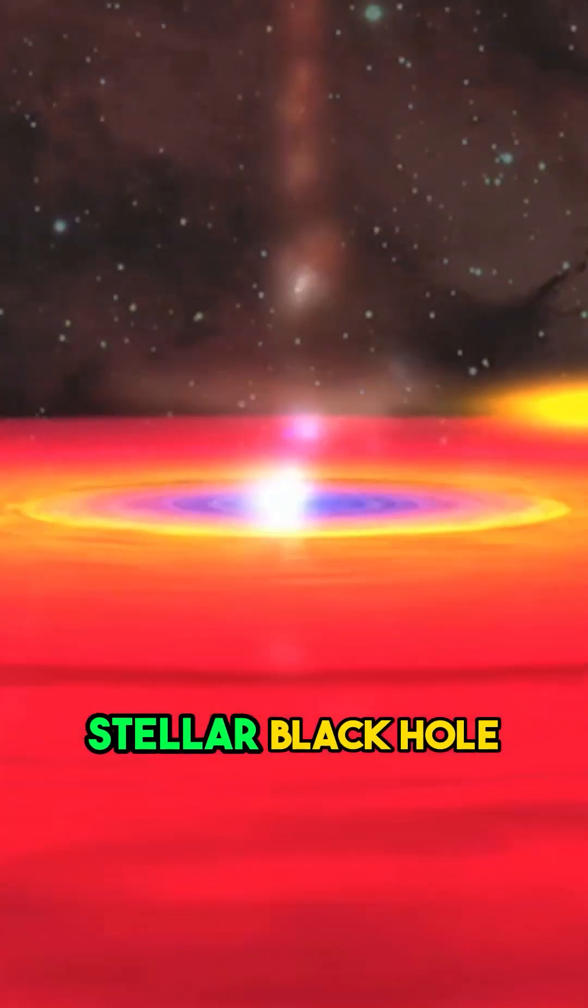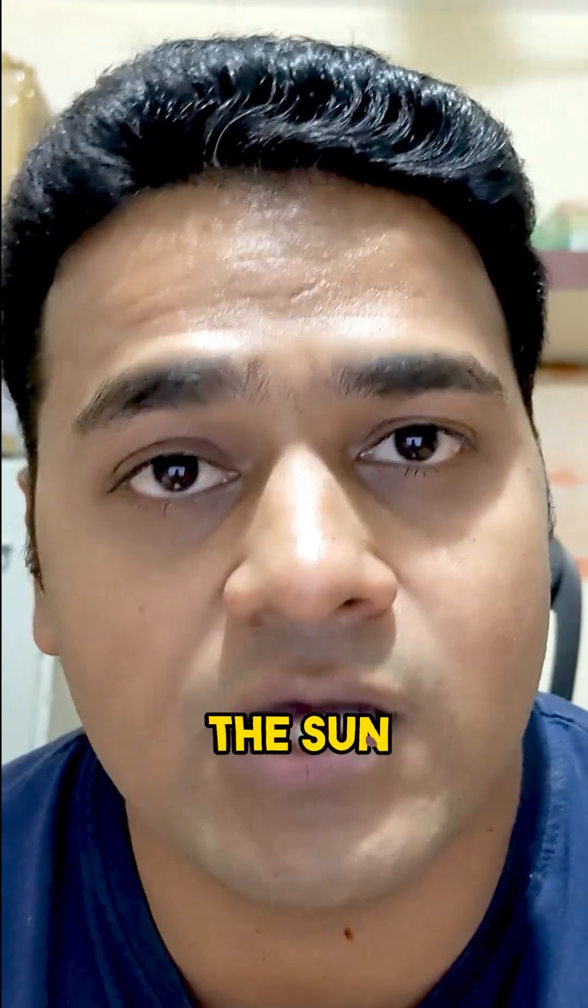First one is stellar black hole. These black holes are small and formed after the collapse of a star. They are usually three times the mass of the sun.